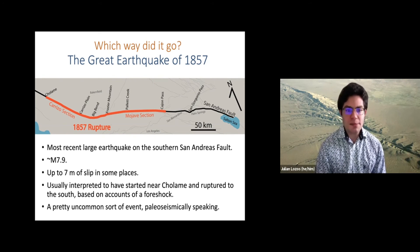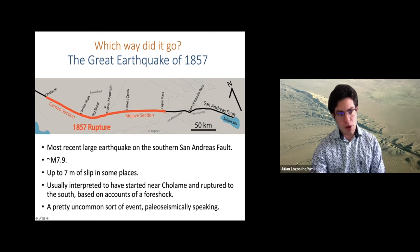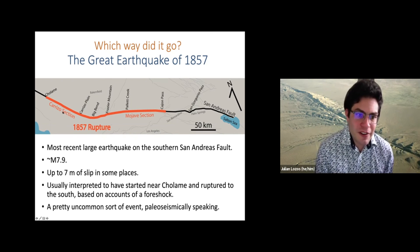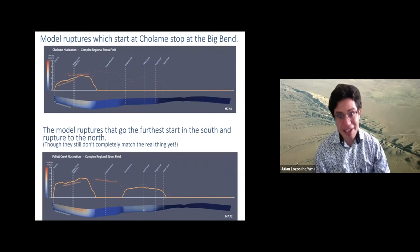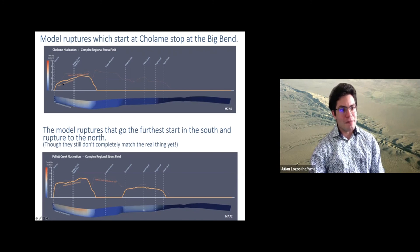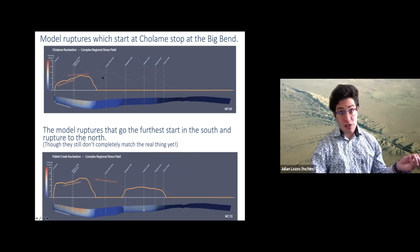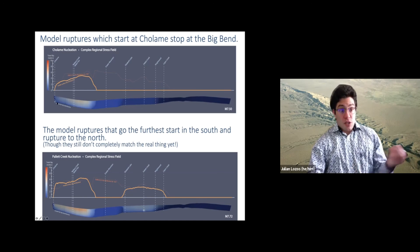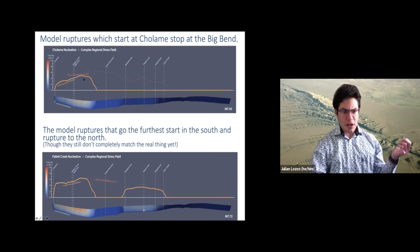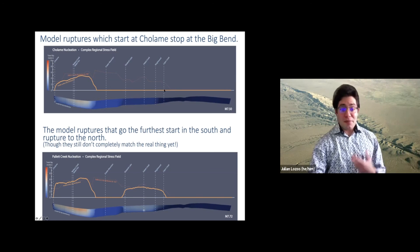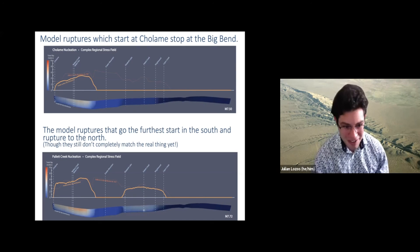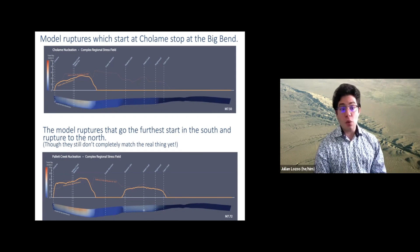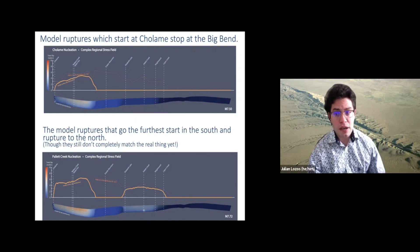This is also a pretty uncommon event paleoseismically speaking — most records don't have rupture going around the Big Bend; they're either just the Mojave or just the Carrizo. I started working on this just trying to figure out what does get rupture around the Big Bend, and I haven't gotten rupture around the Big Bend yet. But the ones that go the furthest, no matter what I tried, are the ones that start to the south and rupture to the north. If I start the earthquake in Cholame, it just stops at the Big Bend with reasonable slip there, then just stops. The ruptures that go furthest are ones I start further south, though I still have the problem of skipping about a 50 kilometer section of fault.